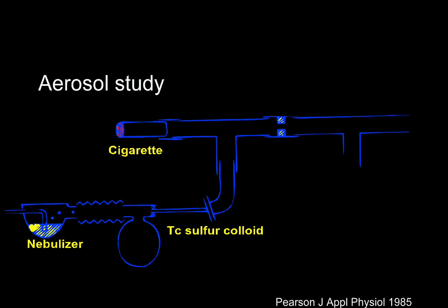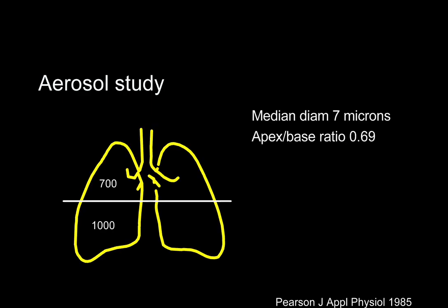Studying particulate deposition in the lungs is difficult. Animal models have different respiratory dynamics than the human lung. Computer modeling is difficult due to flow dynamics in irregularly branching tubes, and human studies are only feasible with radionuclide-labeled particles. What we know from such studies is that particle deposition follows the known distribution of pulmonary ventilation. Because of gravity, most particles deposit in the lower lobes; for every 1,000 particles deposited in the lower lung zones, 700 are deposited in the upper lung zones.